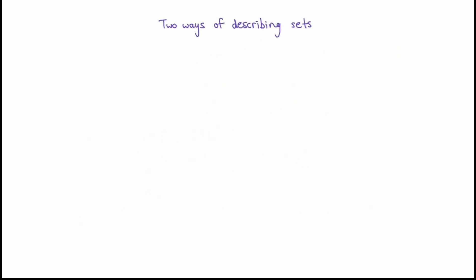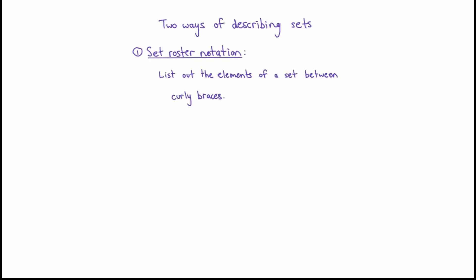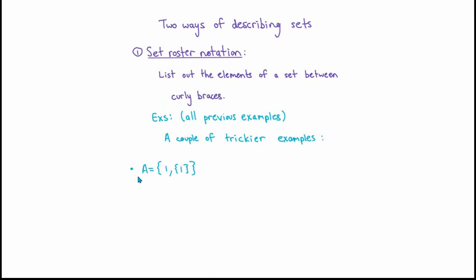There are two basic ways of describing sets. The first is called set roster notation, where you simply write a list of the elements of a set enclosed by curly braces. All of the examples shown so far were written using set roster notation. To explore some subtleties: the elements of a set are separated by commas, and sometimes there could also be ellipses to indicate that some hopefully obvious pattern continues.